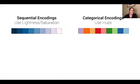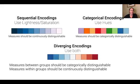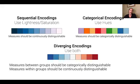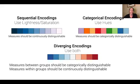One special class of encodings is called diverging encoding. Diverging encodings rely on the lightness and saturation differences we see in sequential encodings, as well as the hue variation we see with categorical data. We apply this when we have data that has a natural zero point. The intuitive way to think about this is temperature — values above or below freezing. If we make freezing our central neutral color, we can encode values above freezing in red and below freezing in blue.